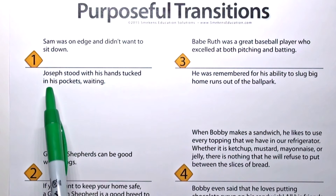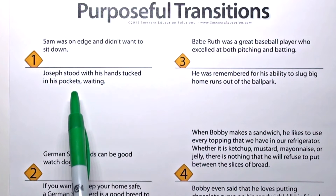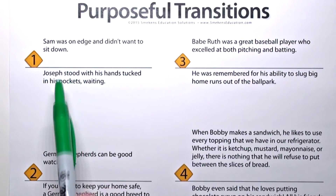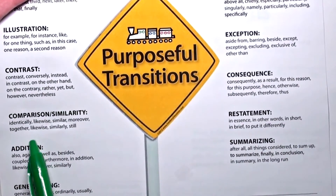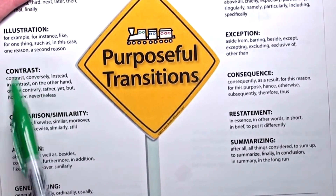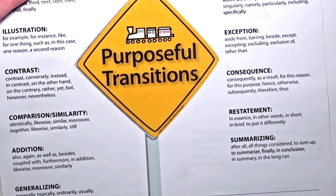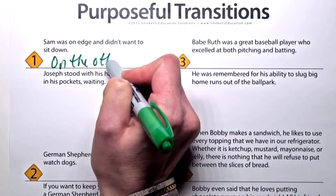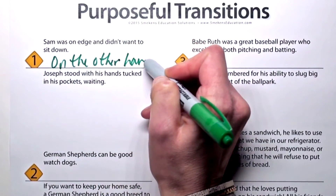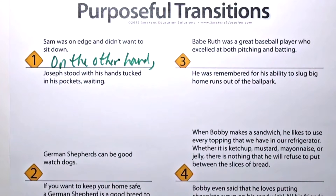The next sentence is: Joseph stood with his hands tucked in his pockets waiting. So I'm envisioning Sam is fidgeting, moving around — he must be nervous. And then Joseph, somebody else, is standing still waiting, kind of patient. Those are very different — they're contrasting. So I should choose one of those examples. I could choose: 'On the other hand, Joseph stood with his hands tucked in his pockets waiting,' because these are contrasting details.